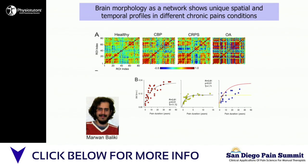It plateaus by around two years in CRPS patients, and in osteoarthritis it's somewhere in between — the data is not very clean and we can't really model it. But the brain is undergoing continuous plasticity and reorganization on the scale of years to decades. We don't understand exactly what's going on, but what is clear is that the system is continuously changing.